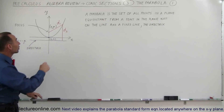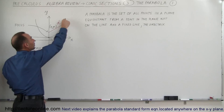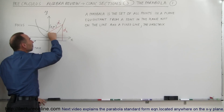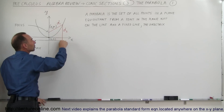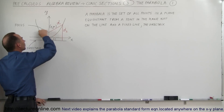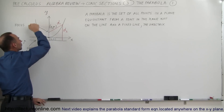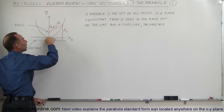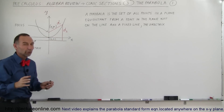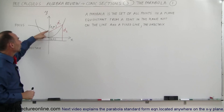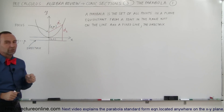Now what that means is that you can pick any point on the parabola, and from any point on the parabola, the distance to this point right here — the focus — must be equal to the distance from there to the directrix. It doesn't matter where on the parabola you go: the distance from there to the focus should equal the distance from there to the directrix, and so forth.